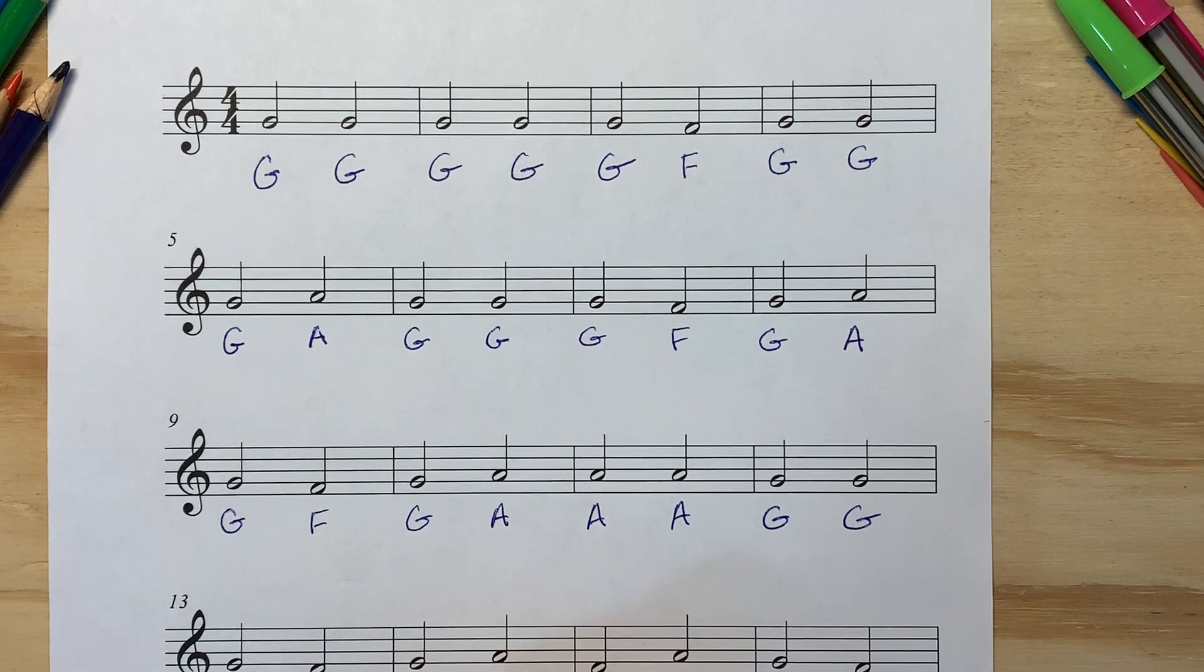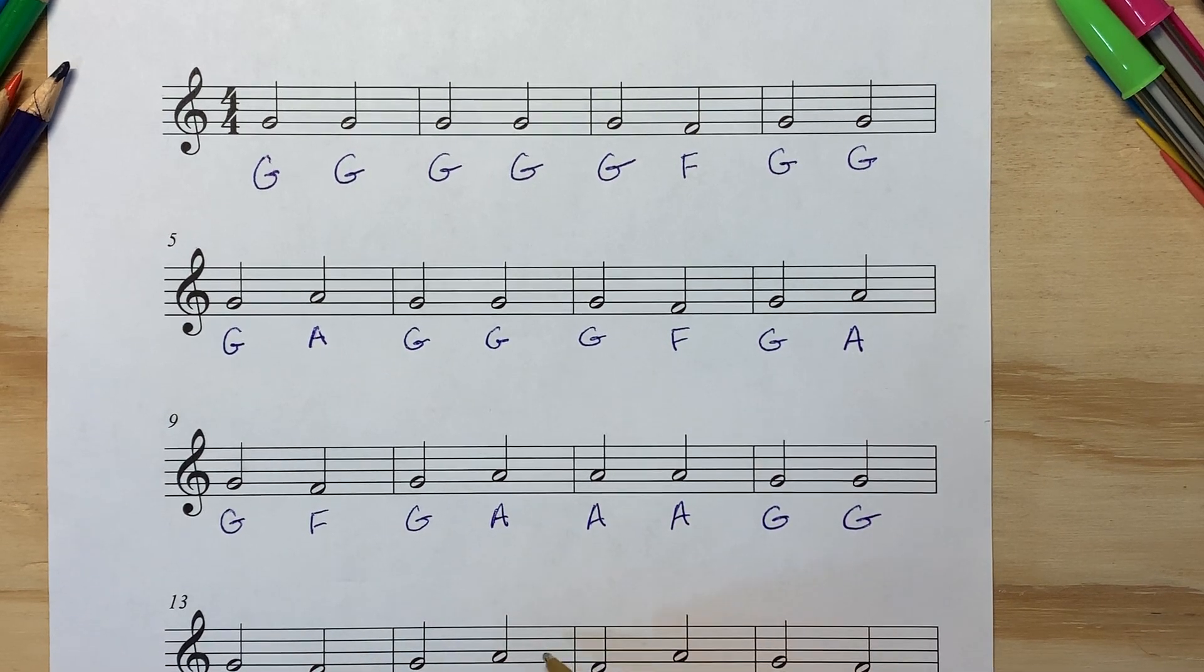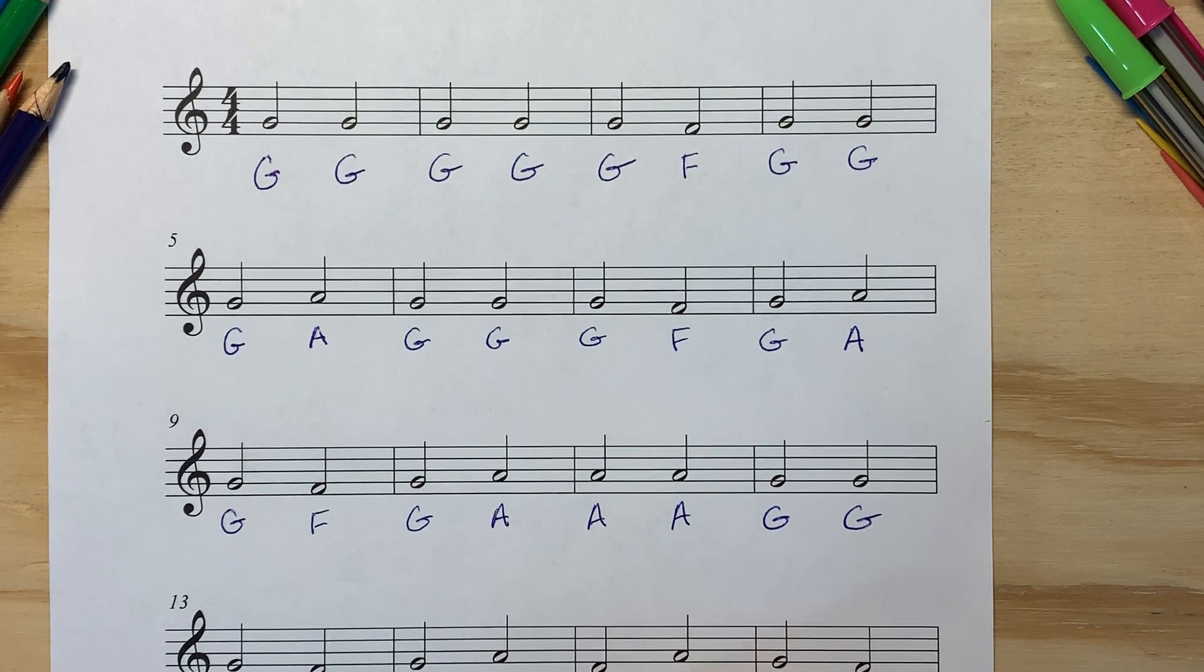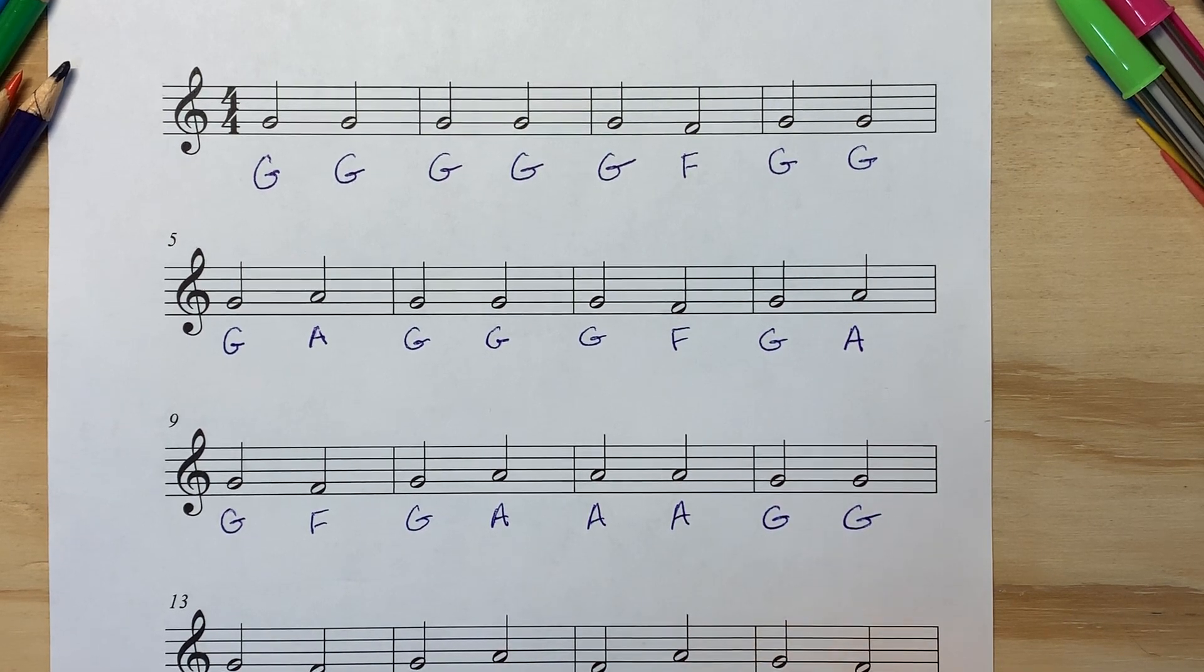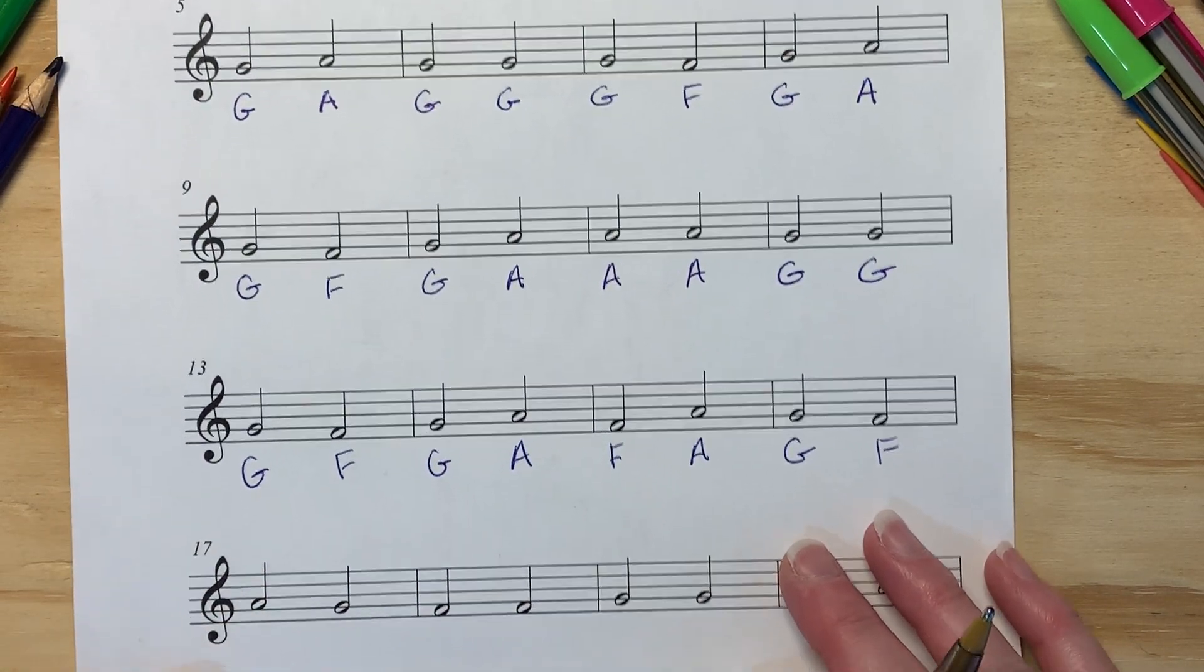Down to an F, up to a G, up to an A. This jumps down to an A, this jumps down to an F, jumps back up to that A, moves down to a G, moves down to an F. Oops, sorry, didn't let you in on that one.